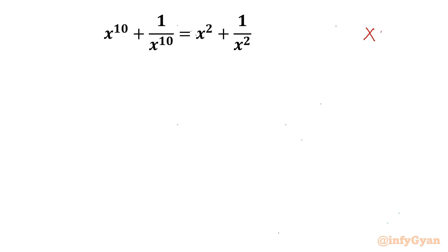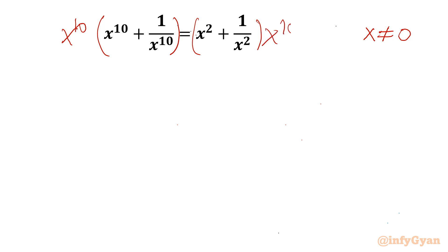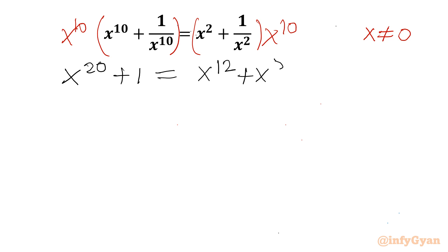By writing x cannot be 0 as it is in the denominator. Now I will multiply both sides by x^10. So we can write our LHS as x^20 + 1 = x^12 + x^8.